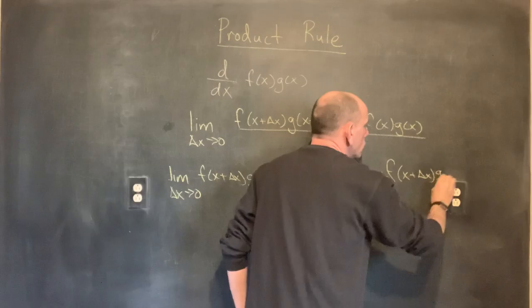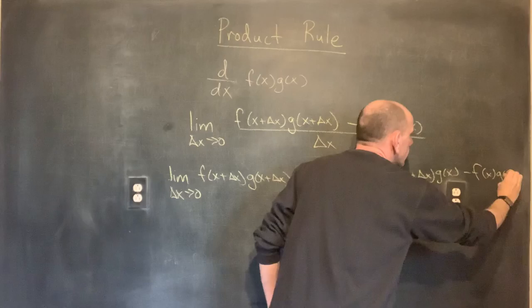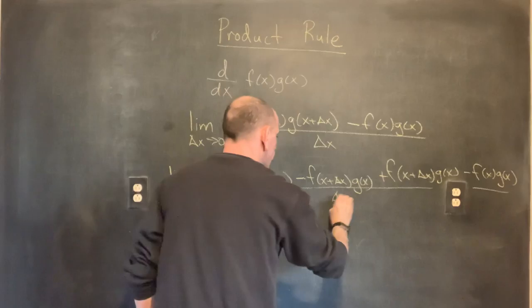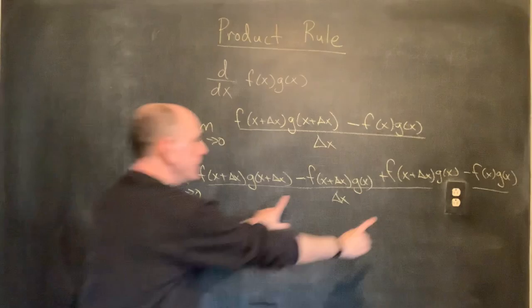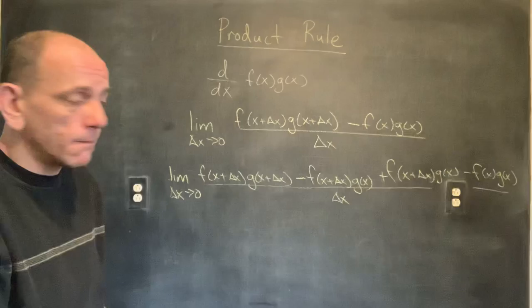So we add f(x + Δx)·g(x) minus f(x)·g(x), all over delta x. I've subtracted and added the same thing, so it's just zero — I haven't changed anything.